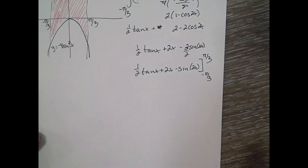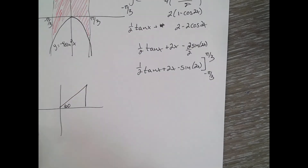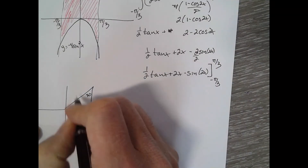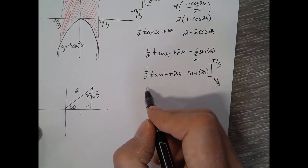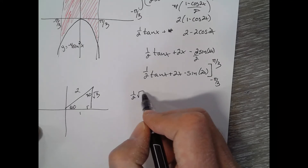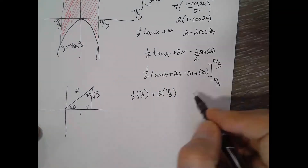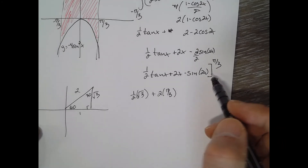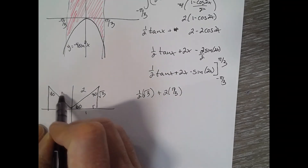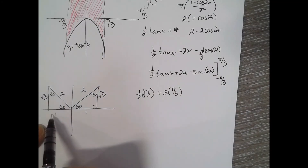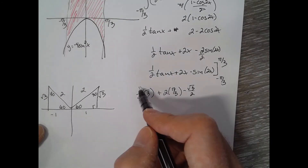Now evaluating: tangent of pi over 3. Drawing a 30-60-90 triangle — pi over 3 is a 60-degree angle, with sides 1, 2, and square root of 3. Tangent of pi over 3 is opposite over adjacent, which is square root of 3. So we get one-half times square root of 3, plus 2 times pi over 3. For sine of 2 times pi over 3, that's sine of 2pi over 3, with a 60-degree reference angle giving sine equal to square root of 3 over 2, so we subtract square root of 3 over 2.